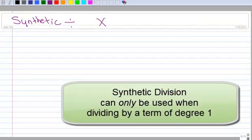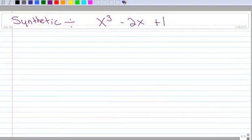Alright, here's an example of using synthetic division to divide a polynomial. Let's take x cubed minus 2x plus 1, and let's divide that by x plus 4.